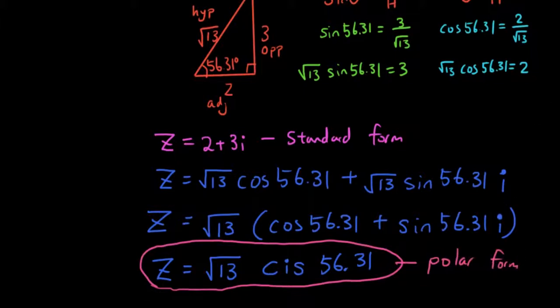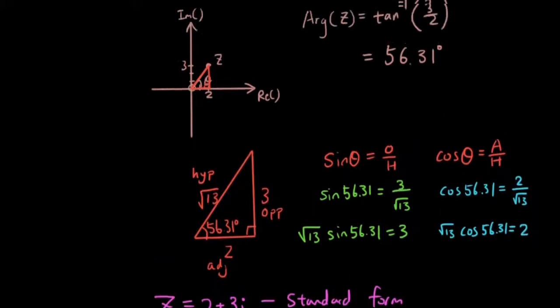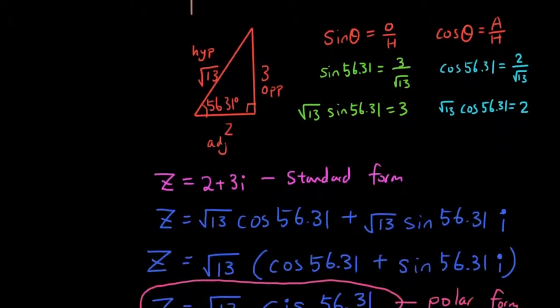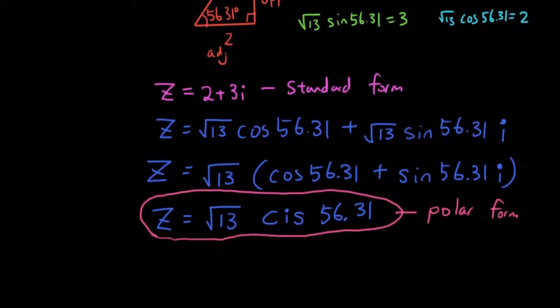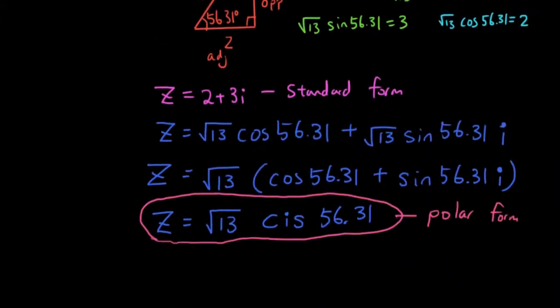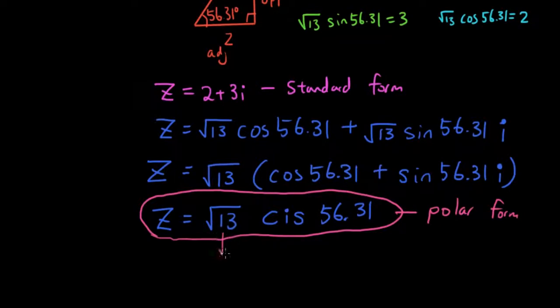So all the calculations that we have done in order to get to polar form, basically anything that I have done from this point onwards, is just to show you what it all means. To get to polar form, the only thing you need to do is find the modulus, find the argument, and then you can write it in this form, because the square root of 13 is the modulus and 56.31 is the argument of z.